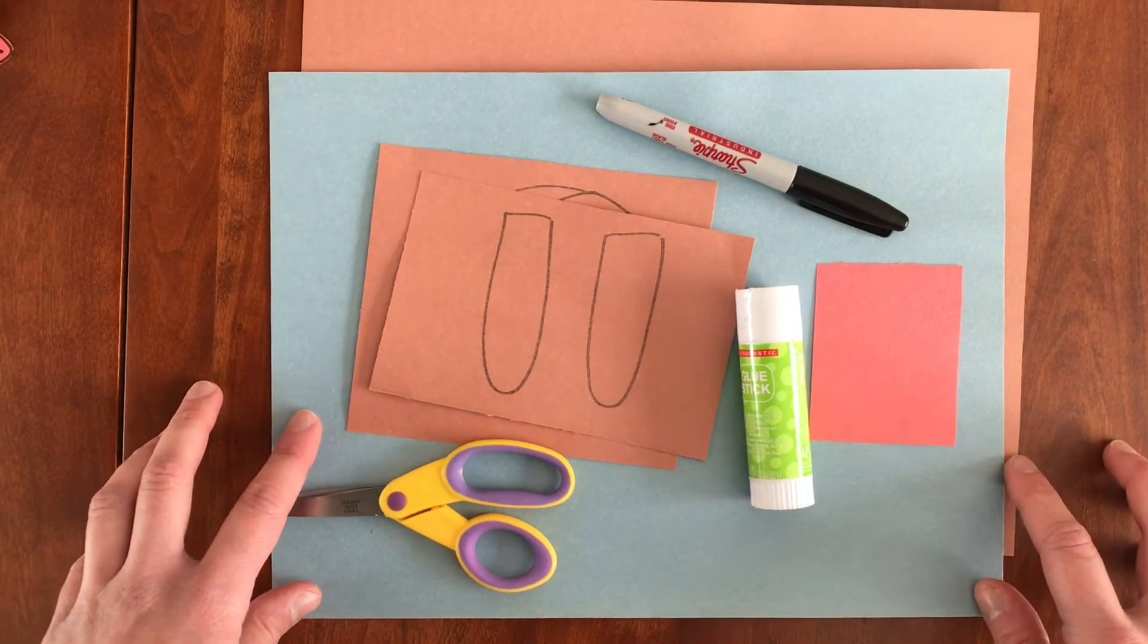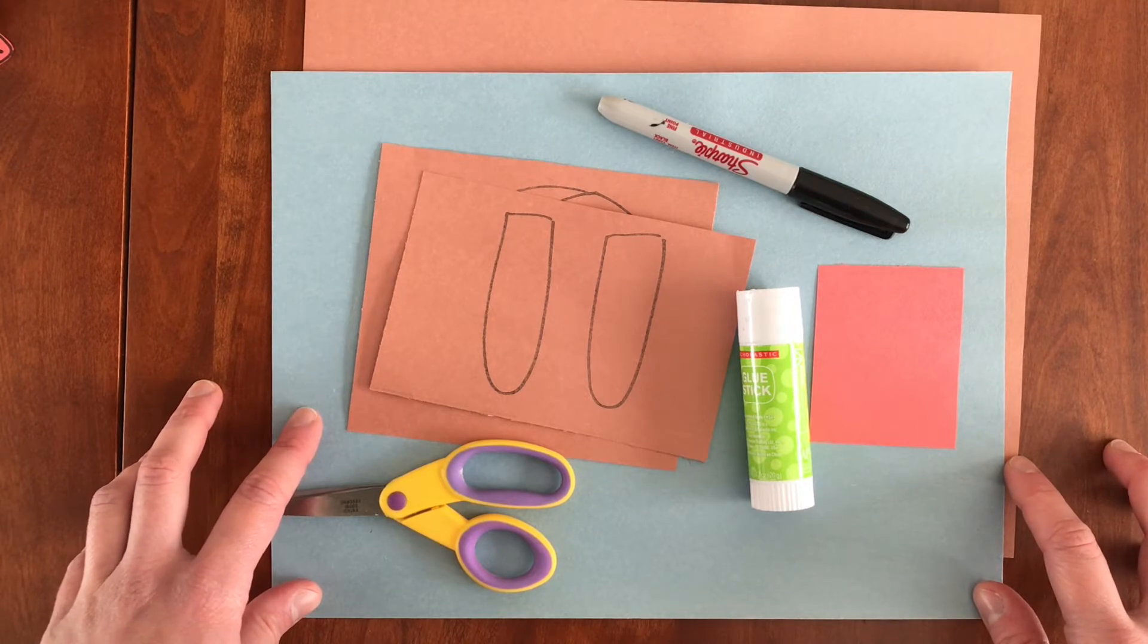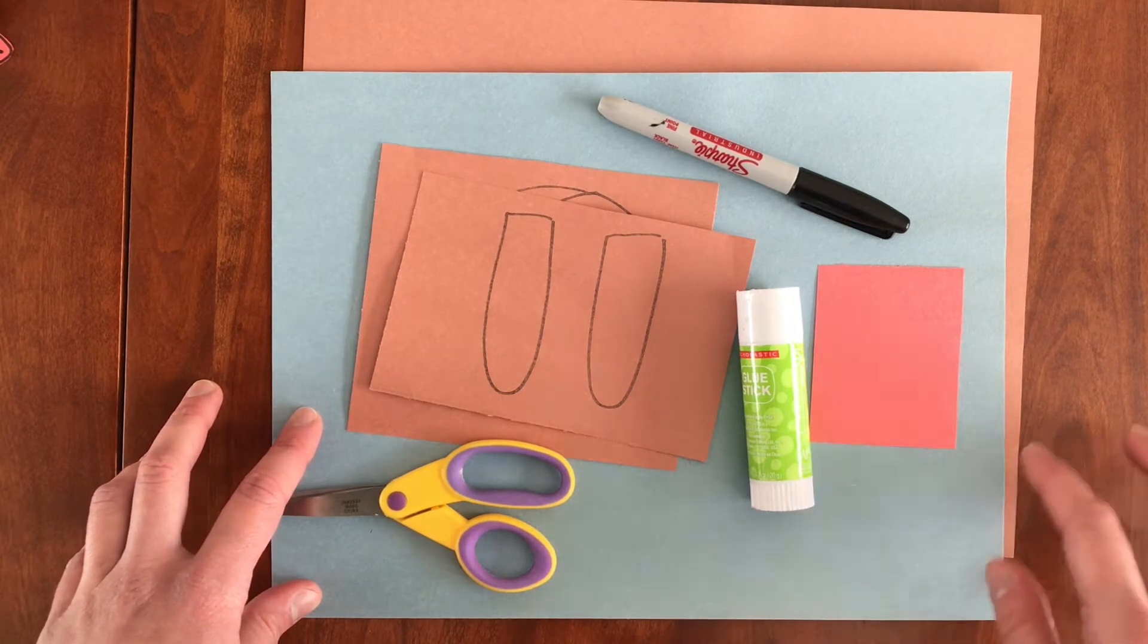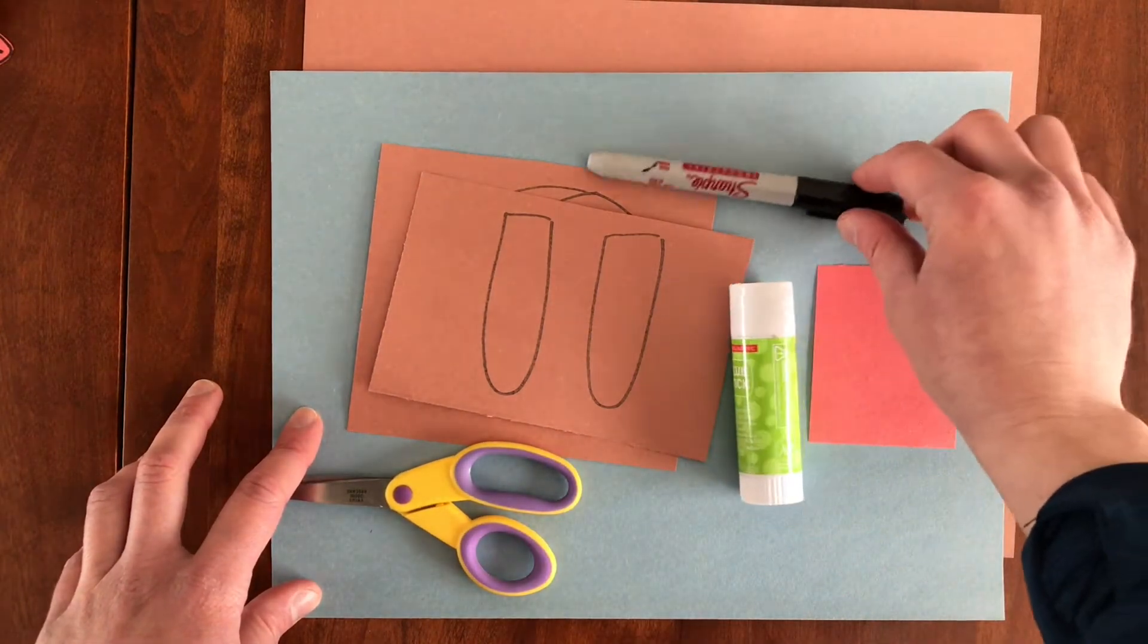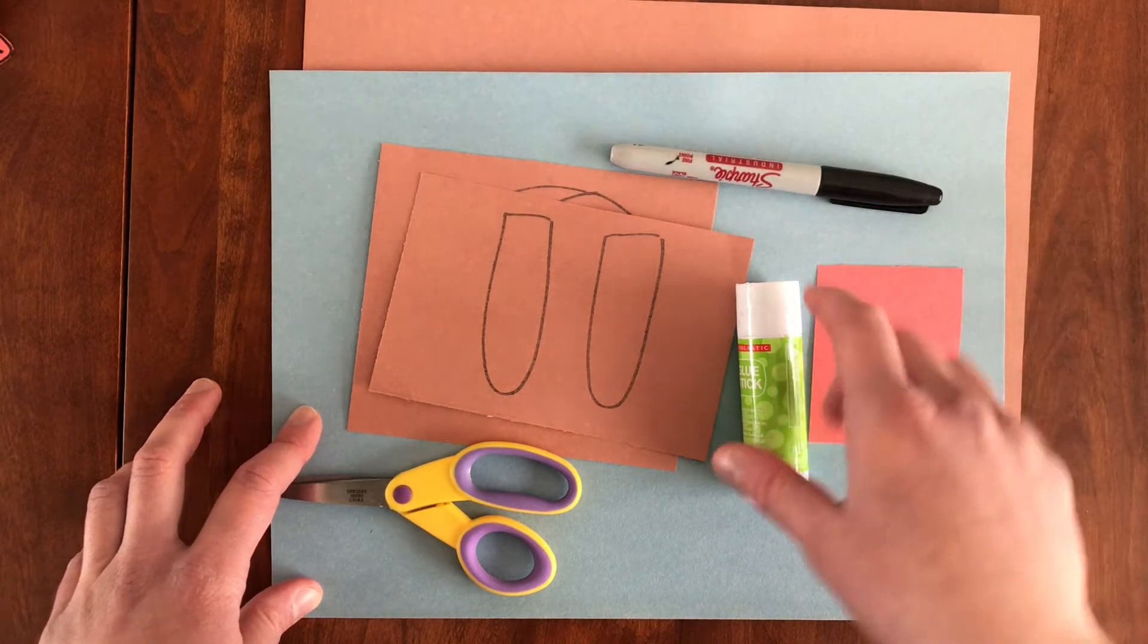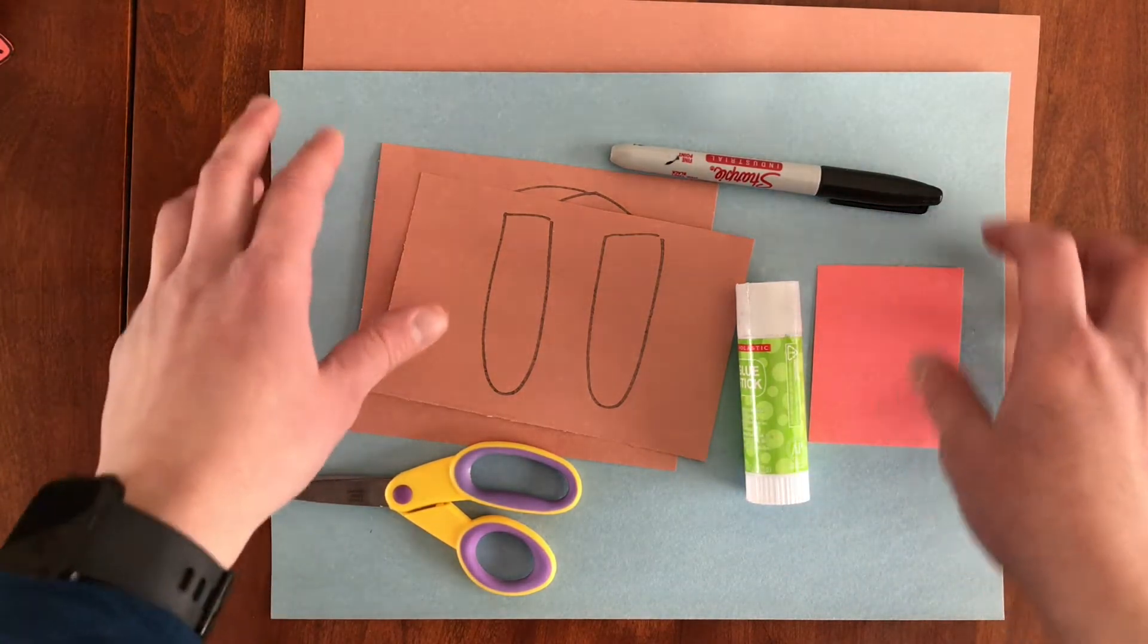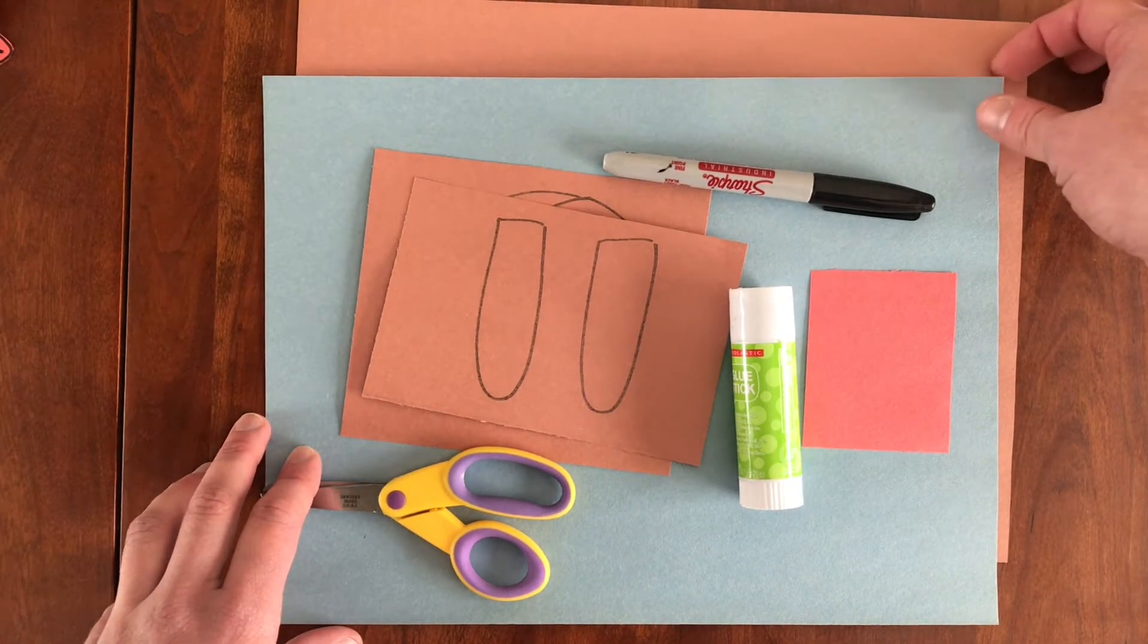All right, so all you need in order to make your very own snail and puppy finger puppets are a pair of scissors, a glue stick, a sharpie or a marker, black probably so that you can draw their faces, brown construction paper or gray, whatever you like, blue or you could use gray too,